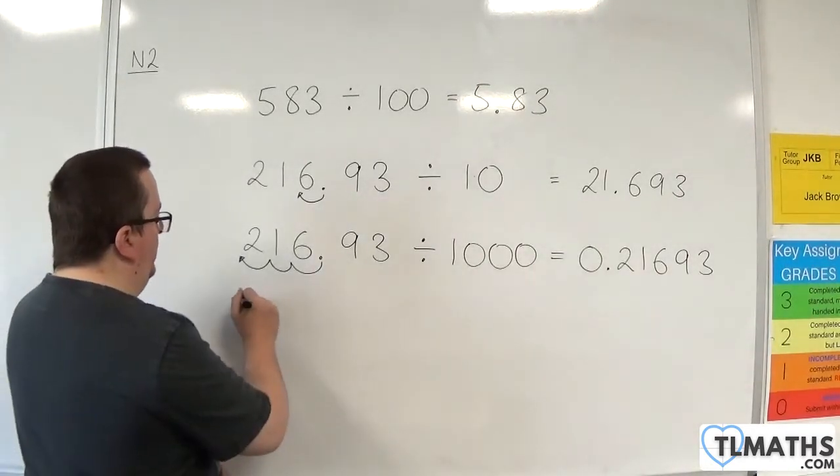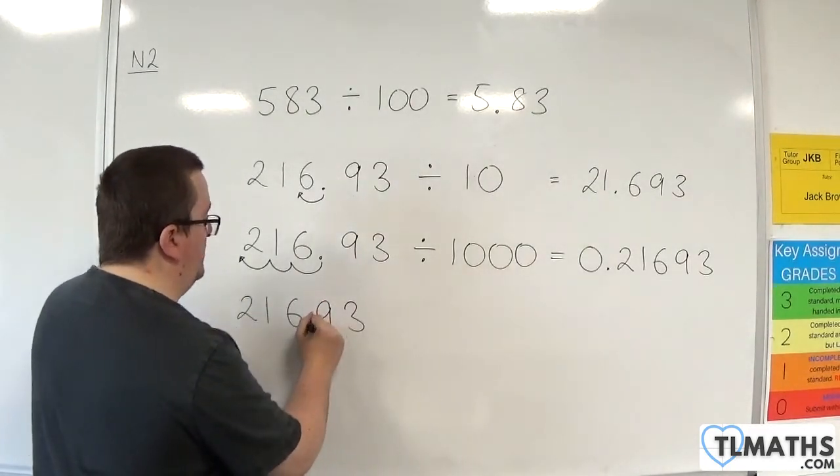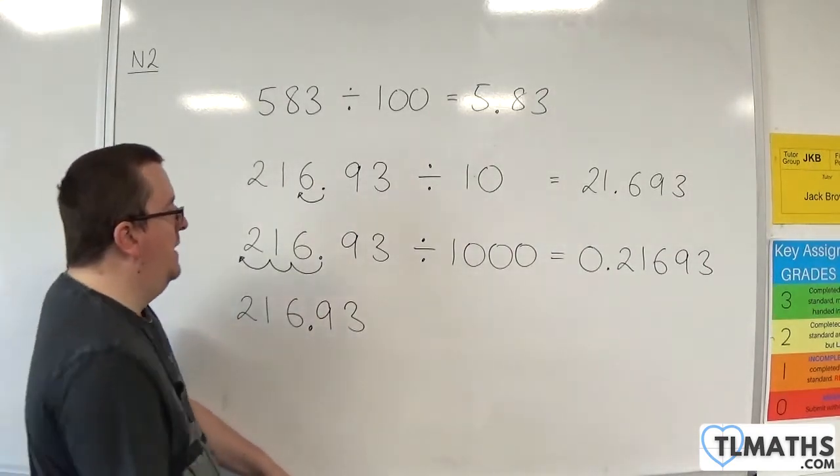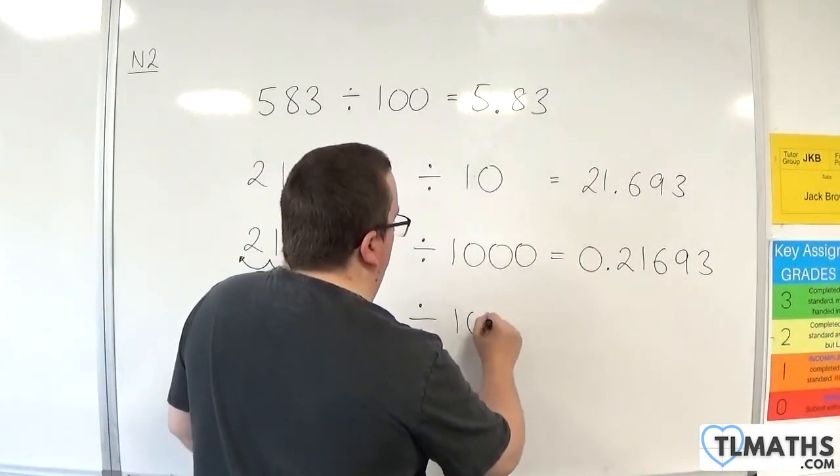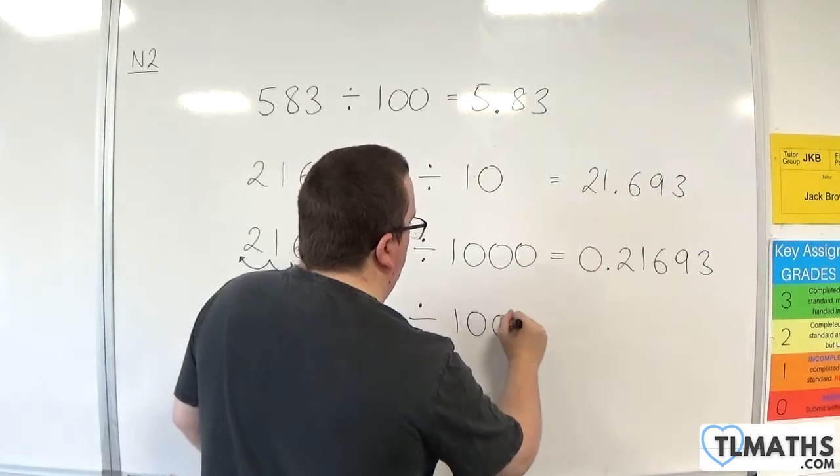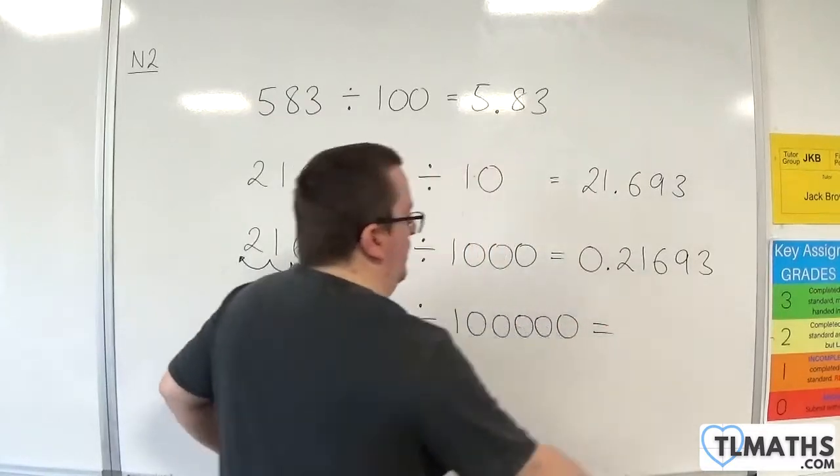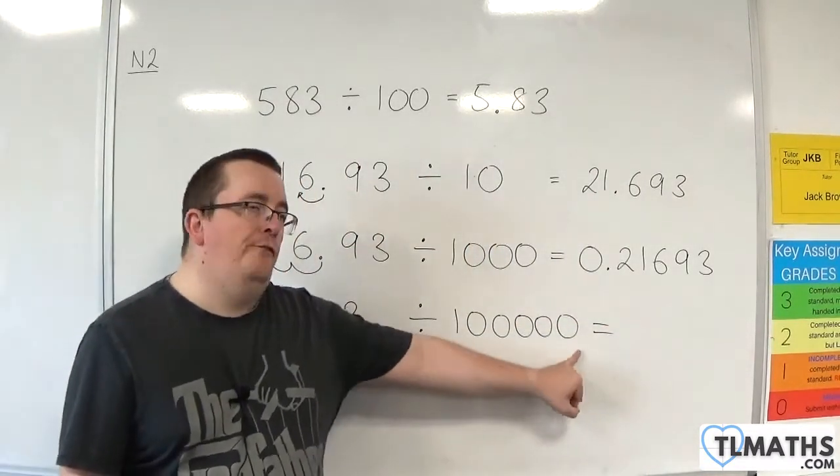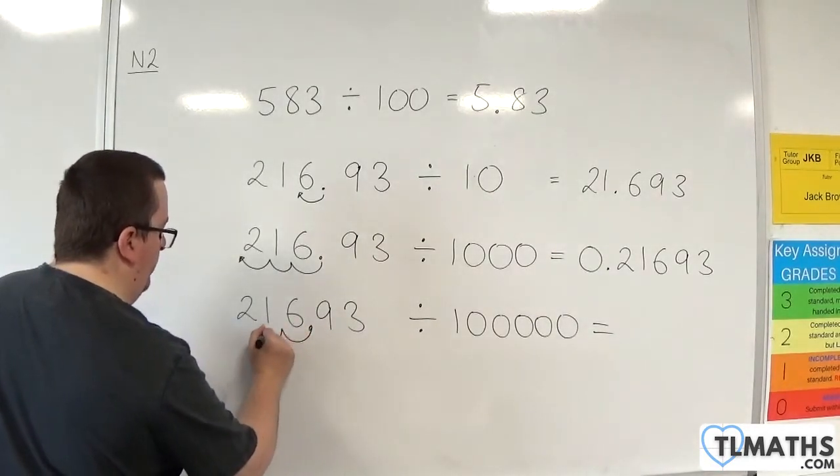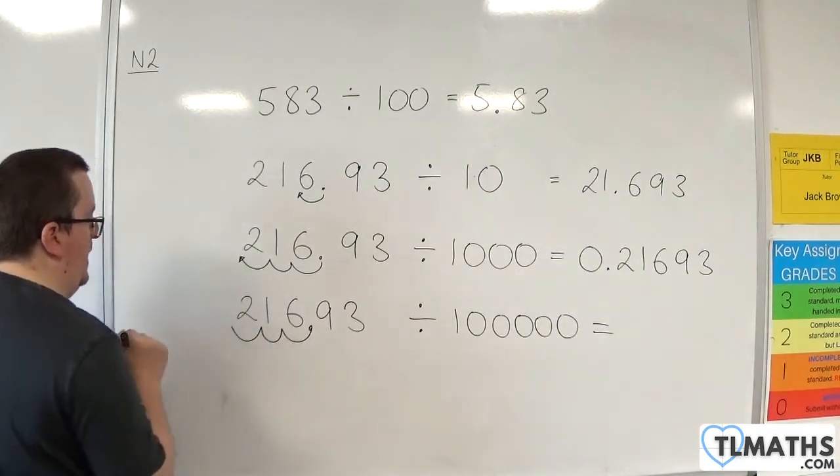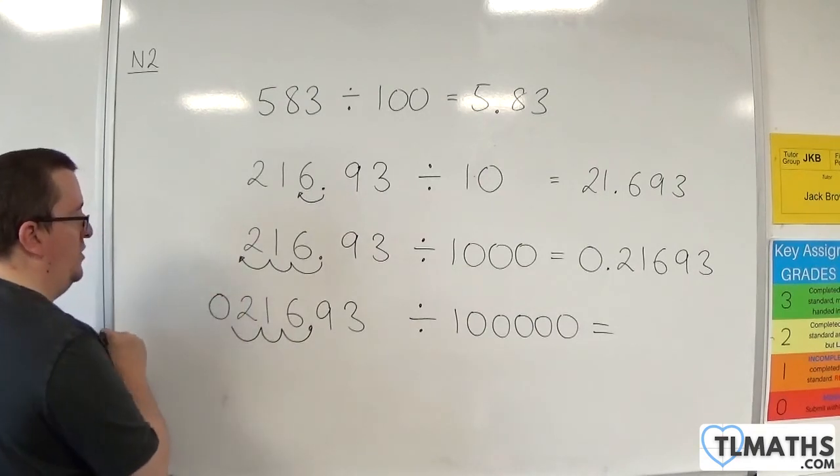So let's go one step further. 216.93. We'll keep the same number. And this time I'm going to divide it by, let's go with 100,000. So that means I need to move the decimal point five places to the left. So we're going to go one, two, three. Now, there's no other values here. So what I need to do is I need to add in a zero just as a placeholder.